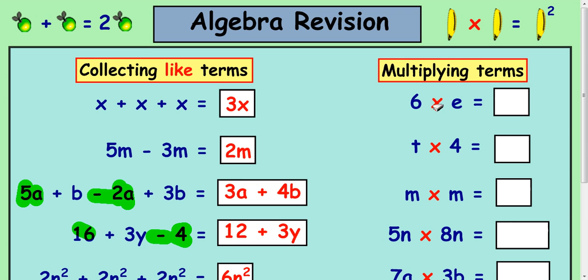Let's look at multiplying algebra. So 6 times e, that's the same as this idea here. So 6 times e can be written as 6e. t times 4, again that can be written as 4t. Notice the number is always at the front. It doesn't matter if the multiplier is at the end here, it always goes in front of the letter.